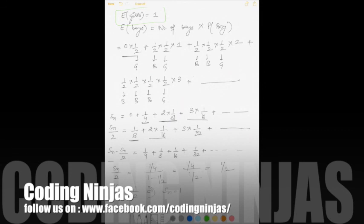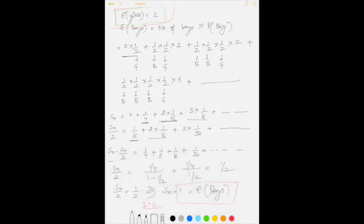That Sn was actually expected number of boys. So we got something like this. Expected number of boys is 1 and expected number of girls is also 1. That means boys to girls ratio is 1 by 1.